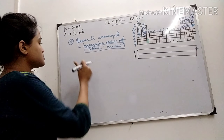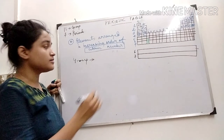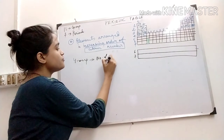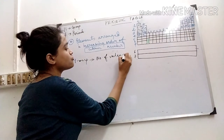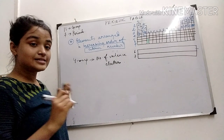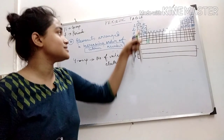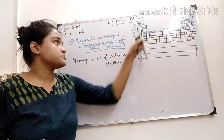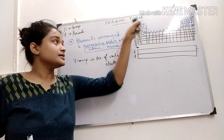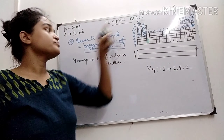For groups, they represent the number of valence electrons. If any element has one valence electron, that is placed in group 1. If it has 2, group 2 — like magnesium has atomic number 12, that means 2, 8, 2. So it has 2 valence electrons, so it is placed in group 2.